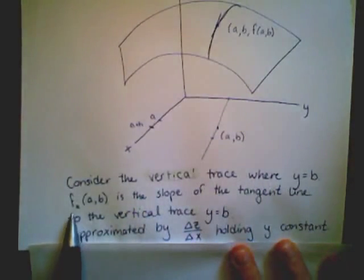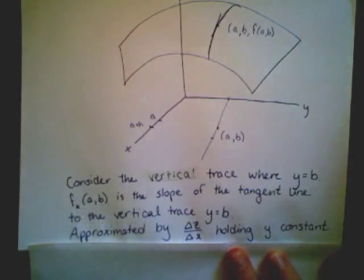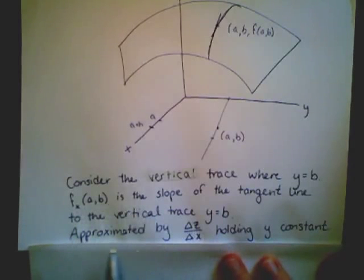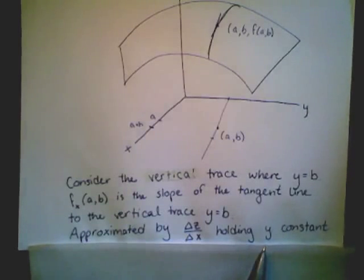In summary, if we look at the vertical trace where y equals b, our partial derivative f sub x of (a, b) is the slope of the tangent line at the vertical trace y equals b. We can approximate this by looking at the change in z over the change in x while holding y constant.